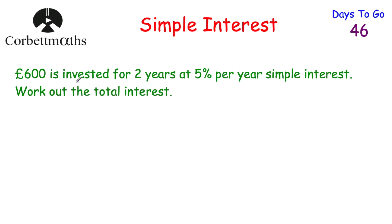Here we've got £600 invested for two years at 5% per year simple interest. Work out the total interest. So £600 put in the bank for two years at 5% per year simple interest. To answer a question like this, we're going to work out what 5% of the initial amount of money invested is — so we're going to work out what 5% of £600 is, and that's how much interest will be earned every single year.